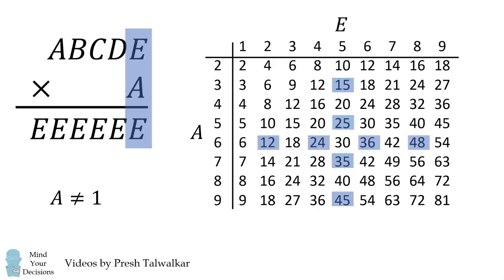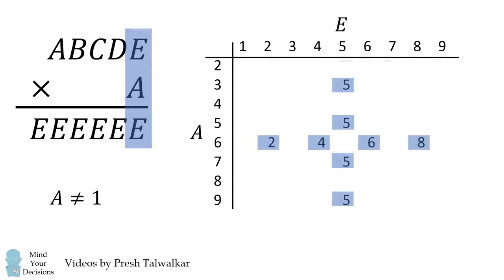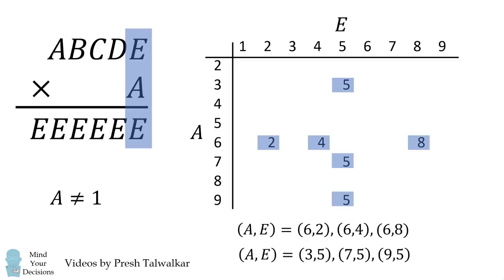There are only eight possibilities. We can further refine these because each letter represents a different digit. Therefore, A cannot be equal to E and we'll remove two of the possibilities. From here, we have only six possibilities which can be classified into two different cases. We either have A is equal to 6 or E is equal to 5. Let's work out each of these cases.